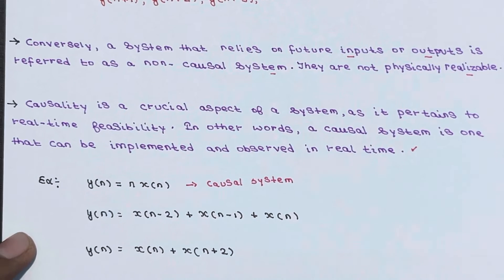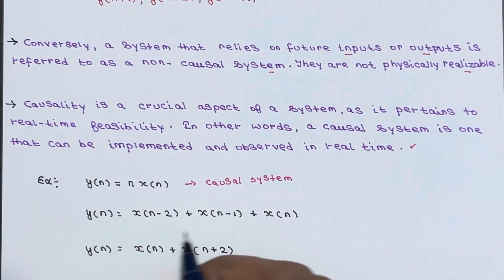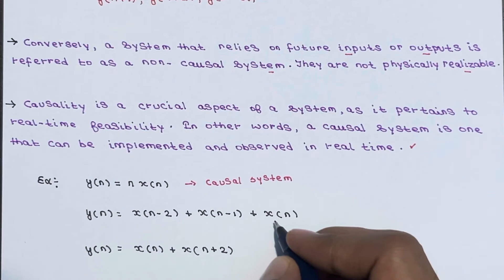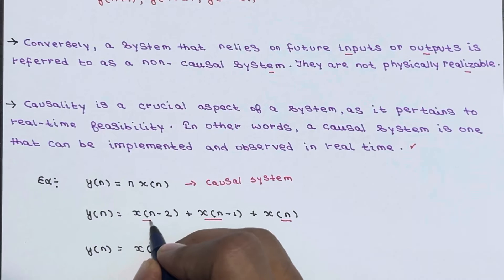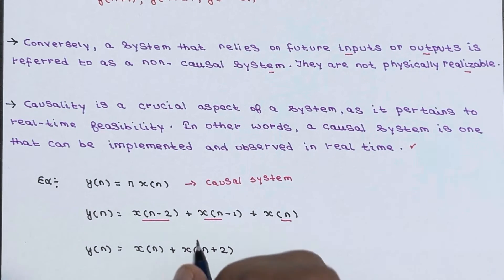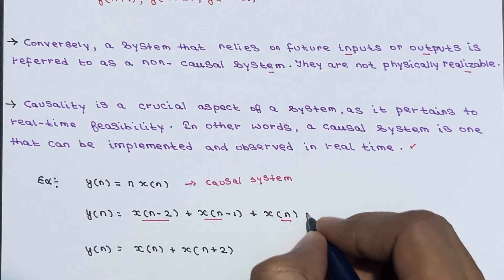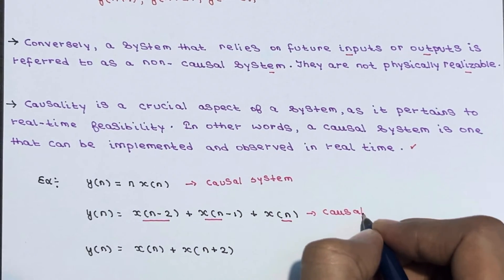Next example: y of n equals x of n minus 2 plus x of n minus 1 plus x of n. Here x of n is the present input, and x of n minus 2 and x of n minus 1 are past inputs. The output depends on present and past inputs, so this is again a causal system.